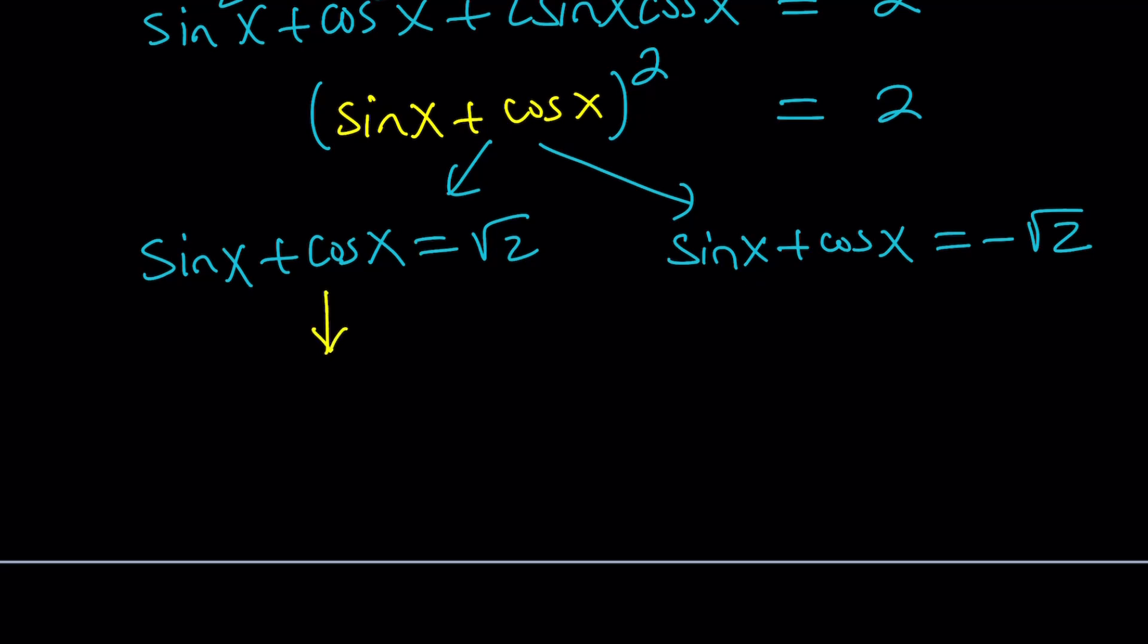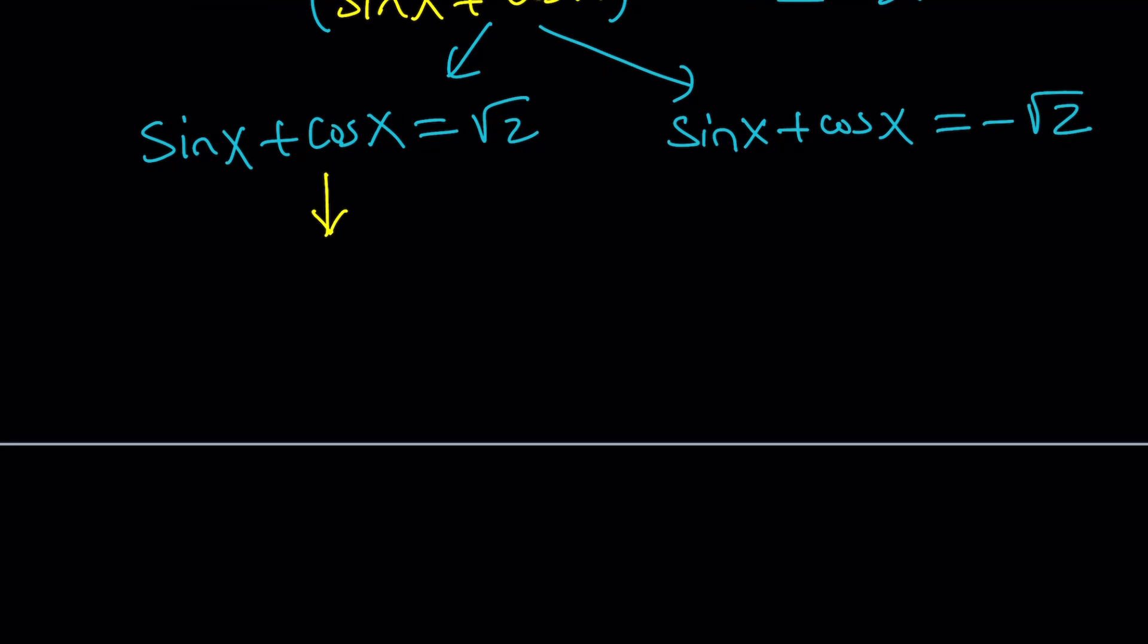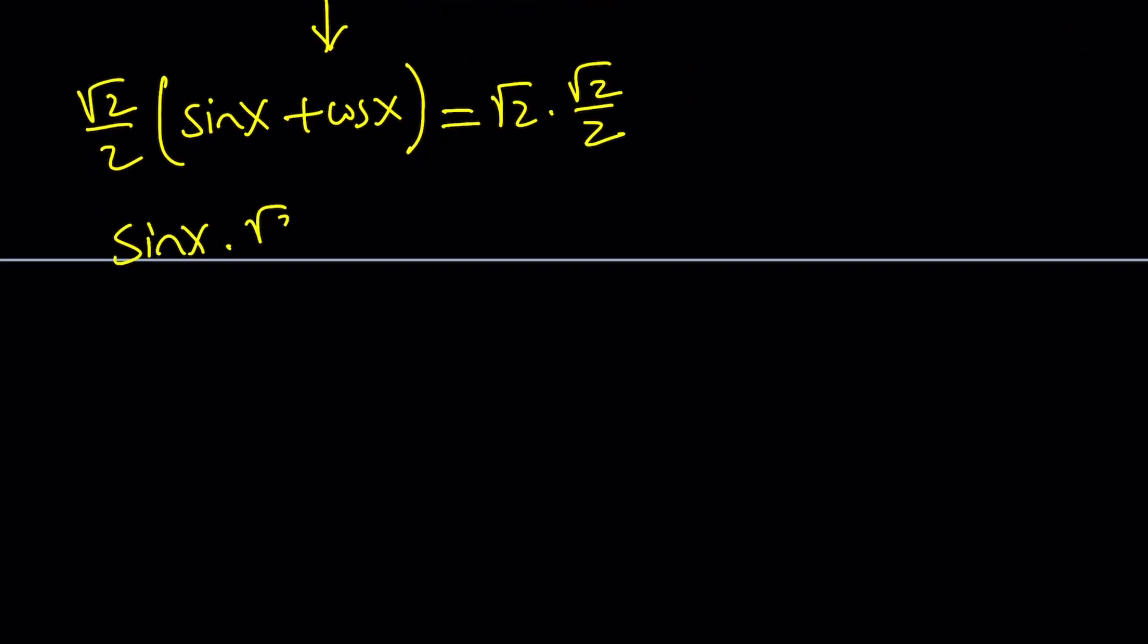I'm going to leave the negative root 2 with you and just focus on this one. The rest is left as an exercise for you. Now, here's what we can do about this equation. The approach that I really like is we're going to multiply both sides by root 2 over 2, which is a special number. When you multiply, it's going to look like this: sine x times root 2 over 2 plus root 2 over 2 times cosine x, and it's going to be 1. There is a reason why I switch these things around.